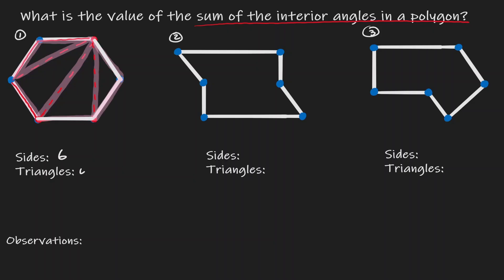Let's take a look at example 2. Let me choose a vertex and connect it to all the other vertices within this polygon. By doing so, we have created a triangle. Moving to the next one, we have two triangles, then three, and then four. This polygon had 6 different sides, and we were able to break it down into 4 different triangles: first, second, third, and fourth.